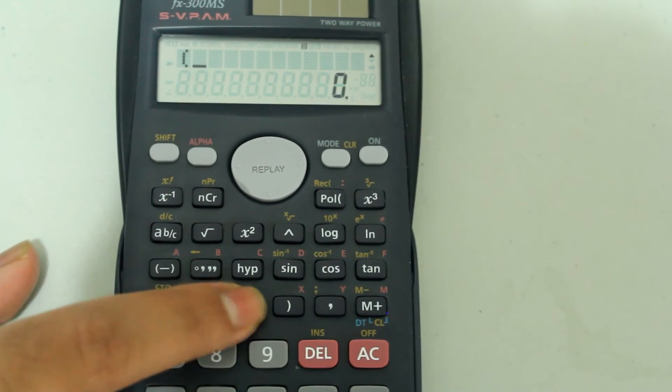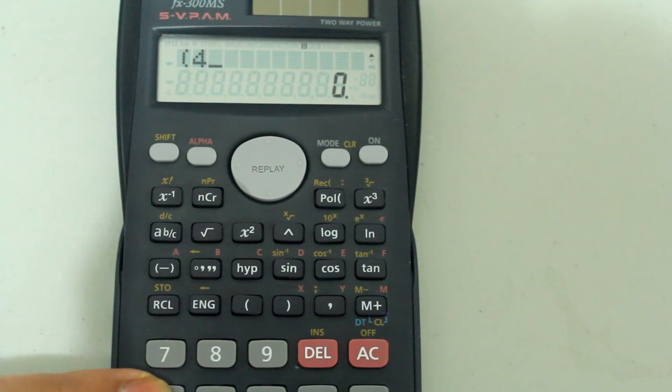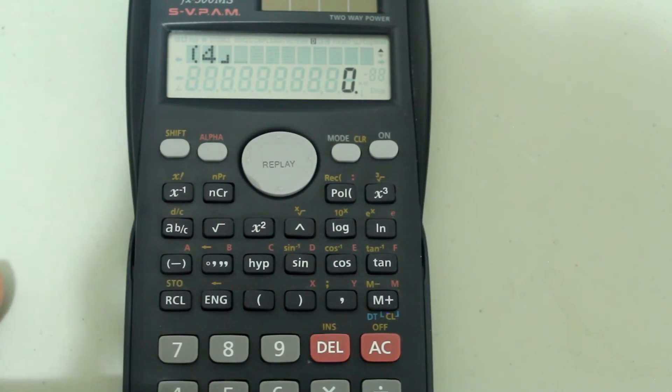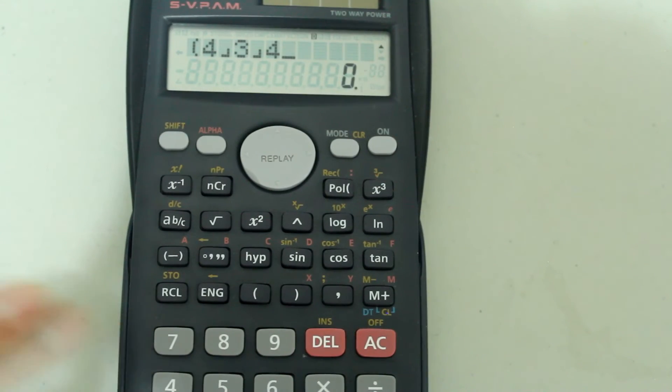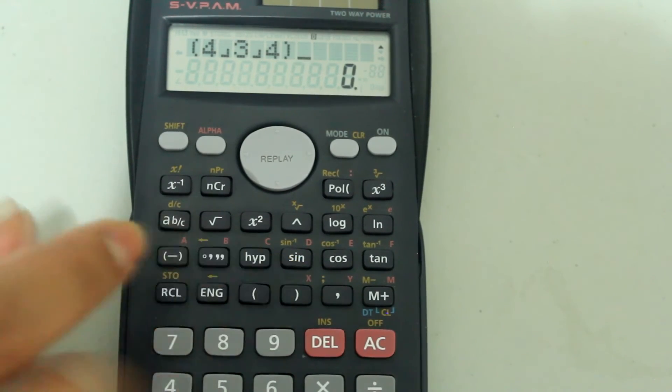So, we're going to open parenthesis, 4, fraction button, 3, fraction button, 4, so now I have 4 and 3 fourths, close the parenthesis,